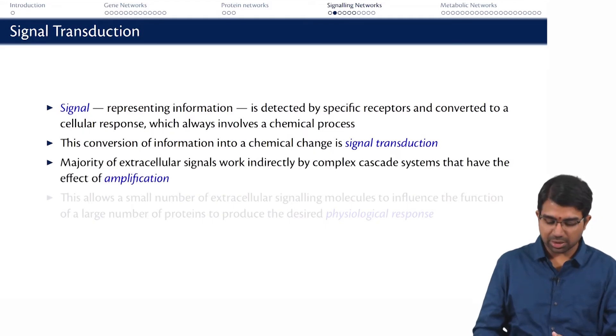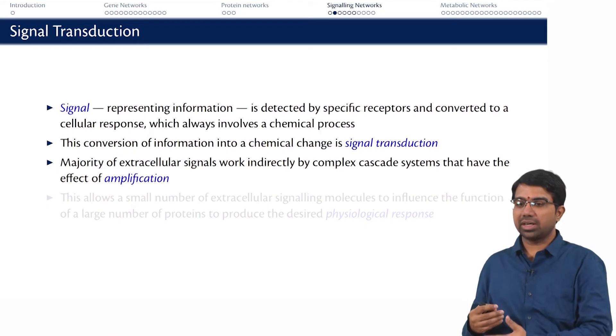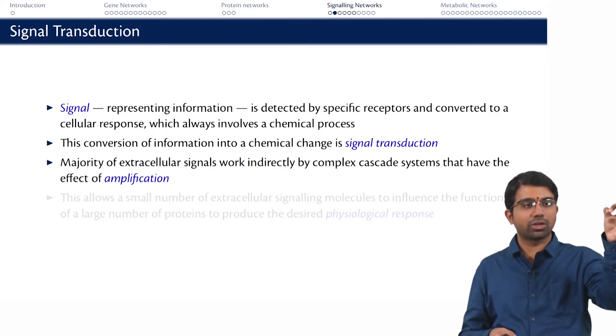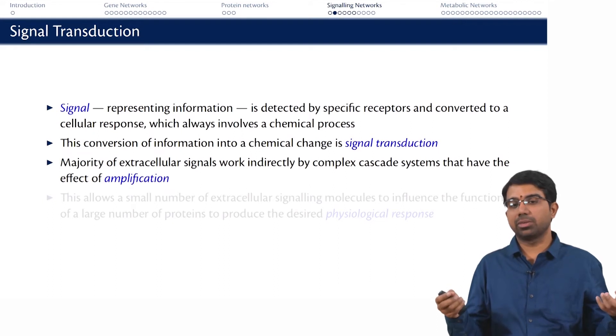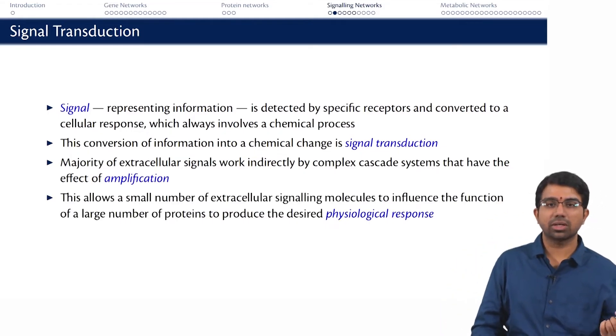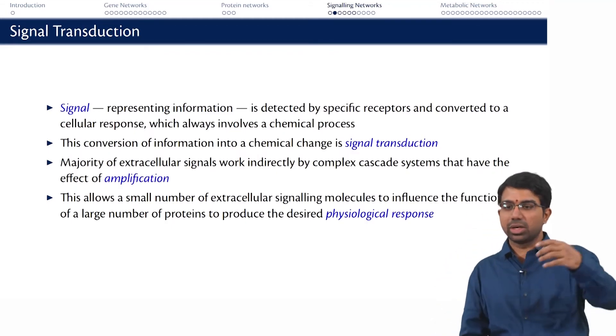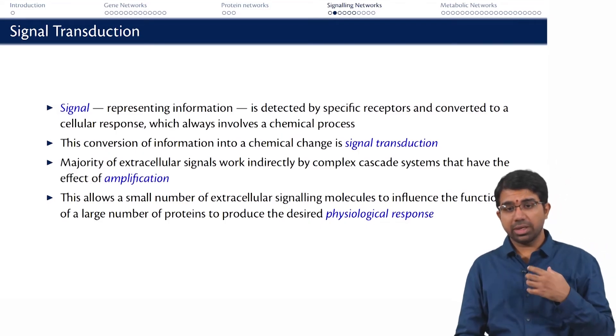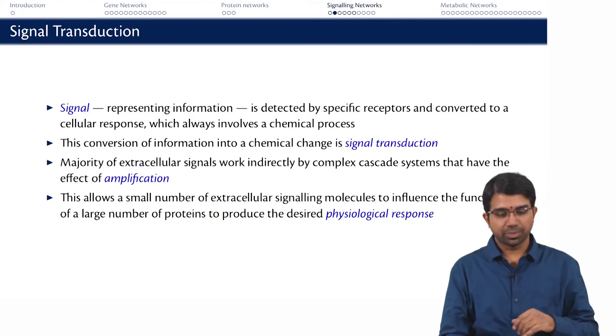Lots of extracellular signals work by complex cascade systems that have the effect of amplification. If you have a long chain of interactions which finally lead to an amplified signal, you may have one photon that is incident on your eye which produces 10 to the 5 proteins or 10 to the 5 of some other metabolites which respond to that one photon. This allows basically for a small number of extracellular signaling molecules to influence the function of a very large signaling pathway or a very large set of proteins within a cell to finally culminate in the desired physiological response which might be motility, chemotaxis moving towards the presence of some glucose, or it could be the change in gene expression. Turning off something - I no longer see lactose, I am turning off my lactose machinery.